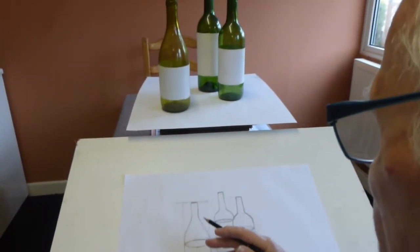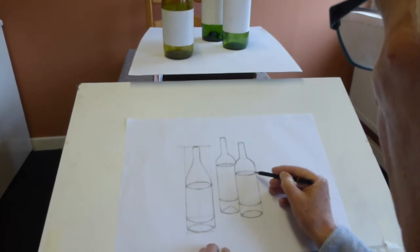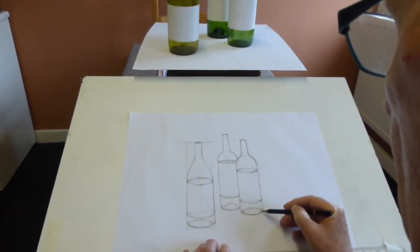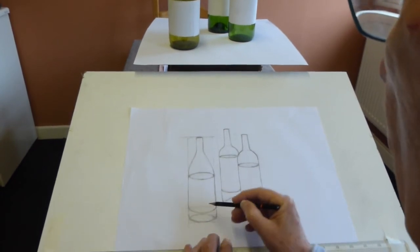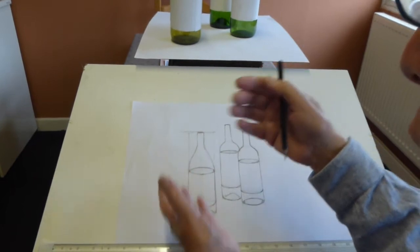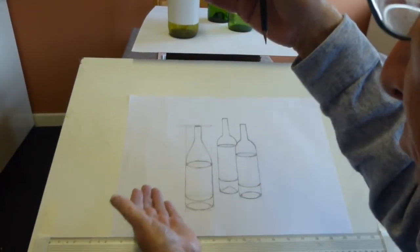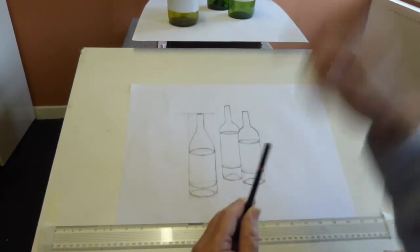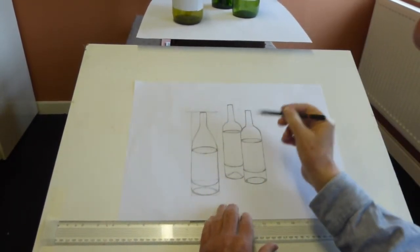As they've come down below my eye level, the curves of the ovals have got greater and greater. So again, that's how perspective is working. So a circle, as it goes down away from your eyes, either up or down, will become greater and greater. So an oval gradually gets wider and wider.